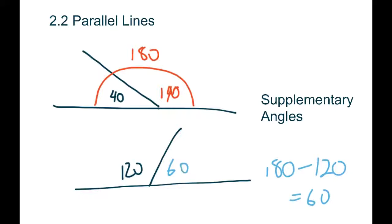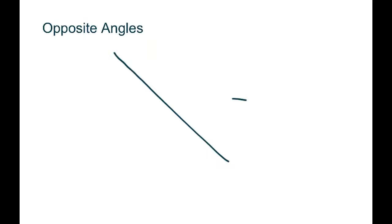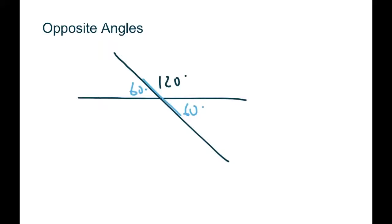Now, if we extend our supplementary system — instead of just one straight line with one angle cutting off it, we look at two lines that crisscross and make an X pattern. Using the same logic, if this angle is 120 degrees, the one beside it has to be 60 because those two form a straight line. The two on the other side also form a straight line, so that one is 60 as well. Going further, 60 and the missing angle make a straight line, so it has to be 120. Opposite angles are basically an extension of supplementary angles where two lines cross in an X, and the angles across from each other have to be the same.